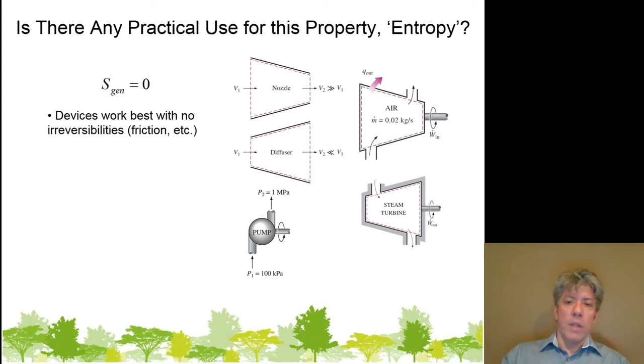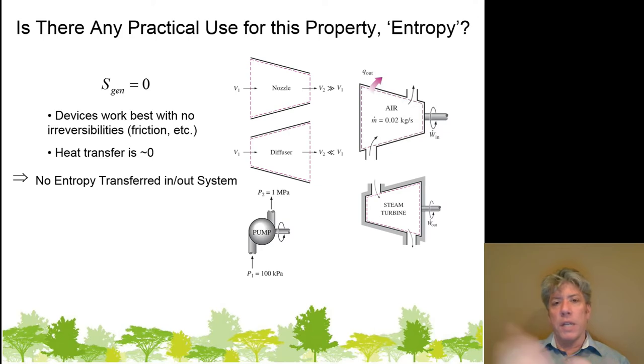So really, we don't want these things to make any entropy because that reduces their efficiency. So what that really means is that we need heat transfer that is very low or close to zero. And we don't want any entropy to be transferred into or out of the system in the process. And therefore, the entropy in and out would be equal to one another. That's the ideal situation. That's what we really want.